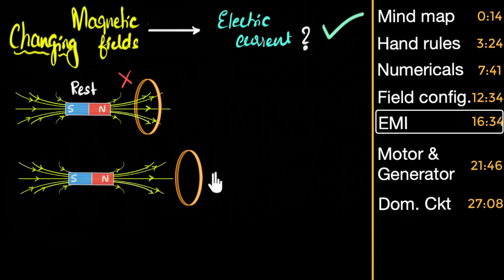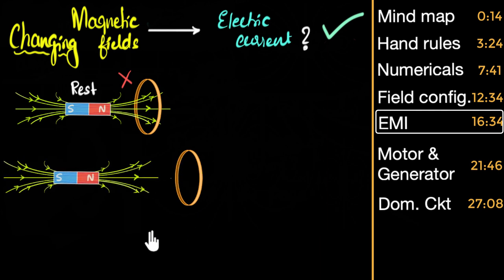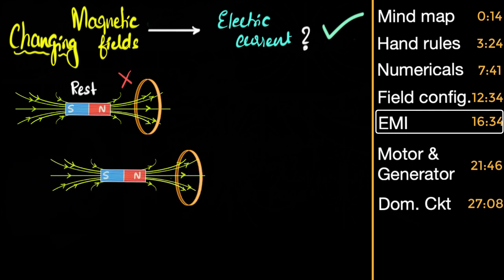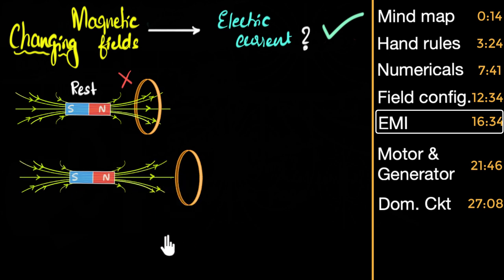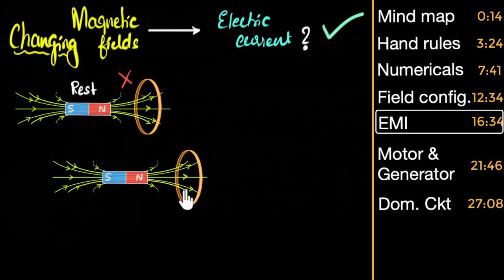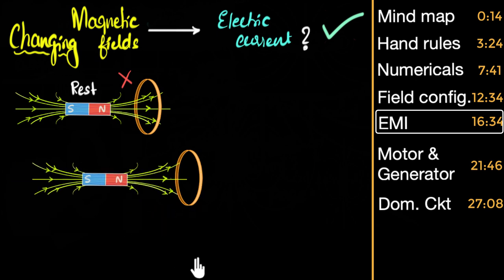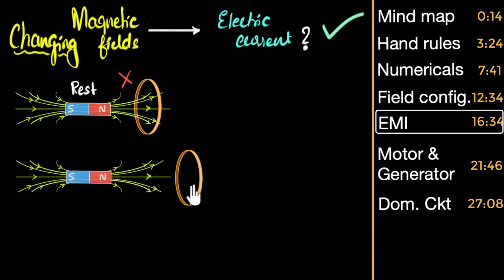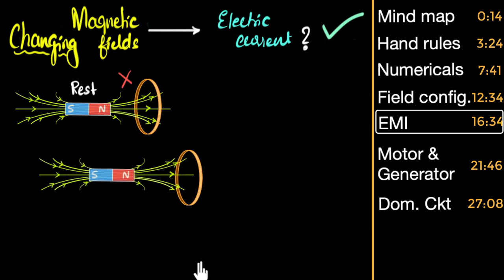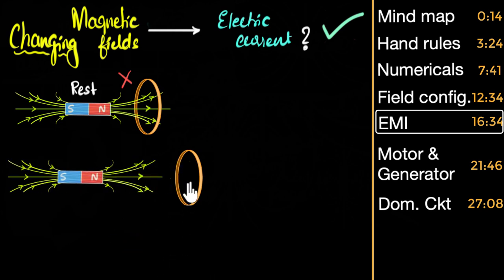Second case: same arrangement, but this time I take the magnet and move it towards the coil. When I move the magnet towards the coil, the magnetic field is increasing — becoming stronger at the coil — so there is a changing magnetic field, and electric current will be induced. Yes, there will be a current induced. What if I move the magnet away from the coil? The magnetic field decreases — it is changing. Since it is changing, there will be an electric current.